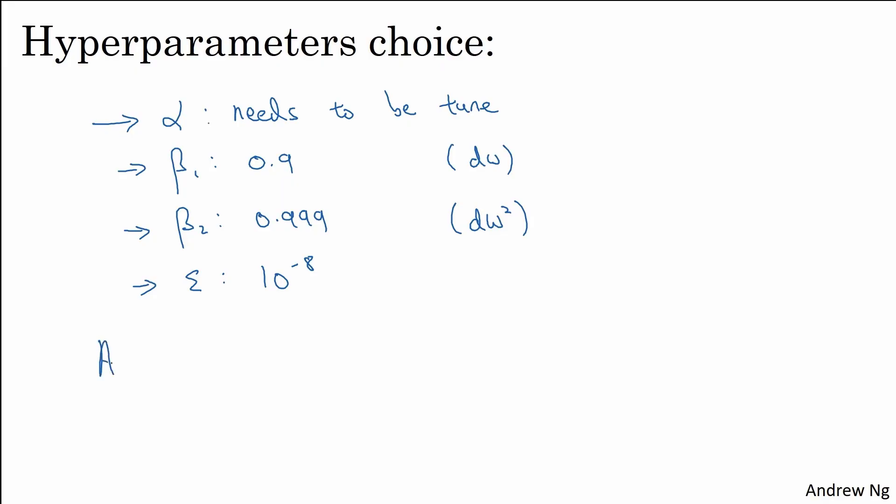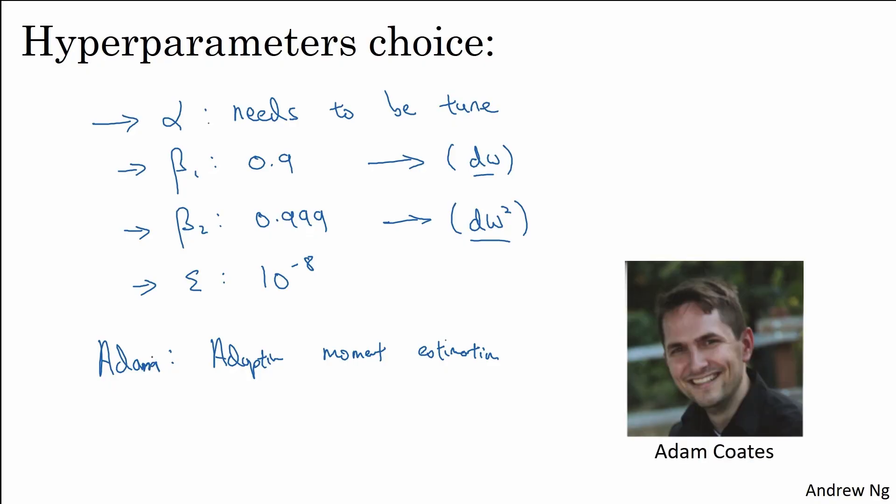So where does the term Adam come from? Adam stands for adaptive moment estimation. So beta 1 is computing the mean of the derivatives. This is called the first moment, and beta 2 is used to compute exponentially weighted average of the squares, and that's called the second moment. So that gives rise to the name adaptive moment estimation. But everyone just calls it the Adam optimization algorithm. And by the way, one of my long-term friends and collaborators is called Adam Coates. As far as I know, this algorithm doesn't have anything to do with him, except for the fact that I think he uses it sometimes. But sometimes I get asked that question.